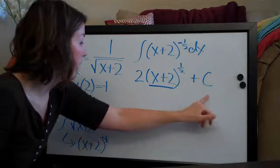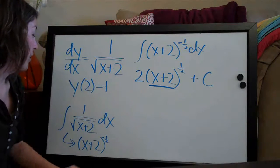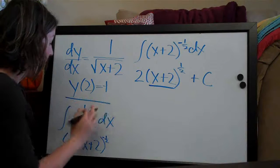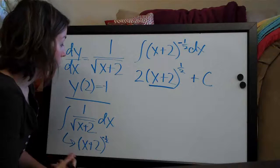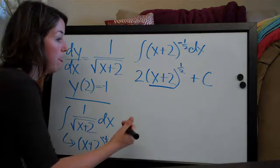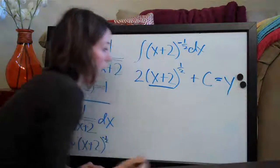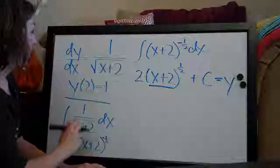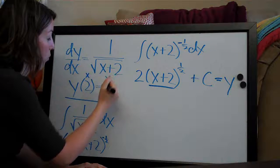So we've got our function now integrated, so now we need to apply the initial condition, y of 2 equals negative 1. So the way that we'll do that, and remember that this whole function here is equal to y. So we plug 2 in for x and negative 1 in for y.